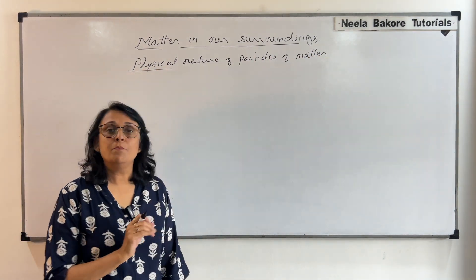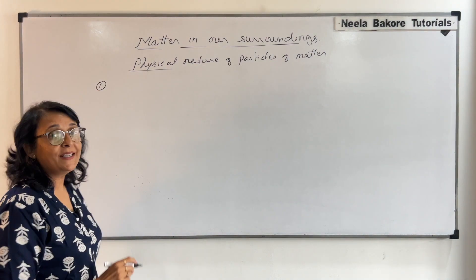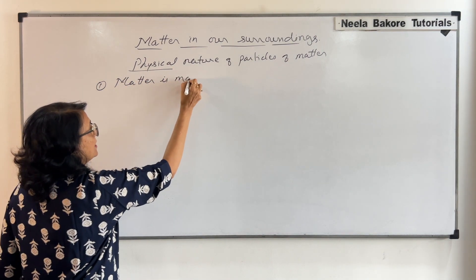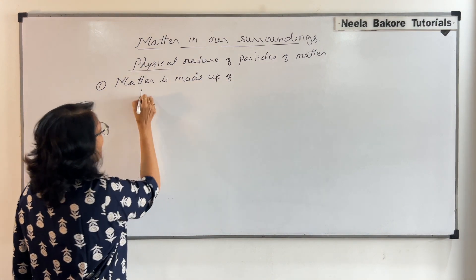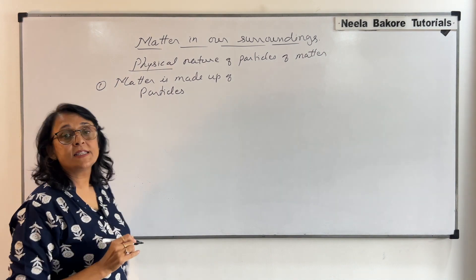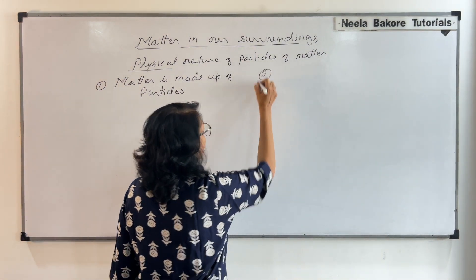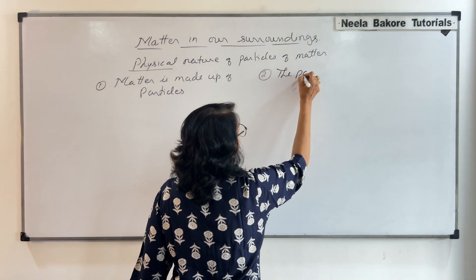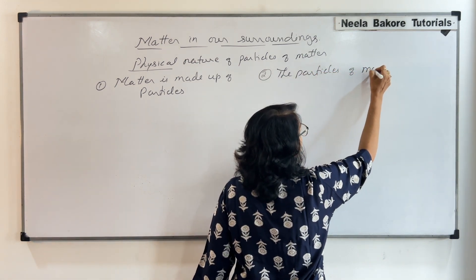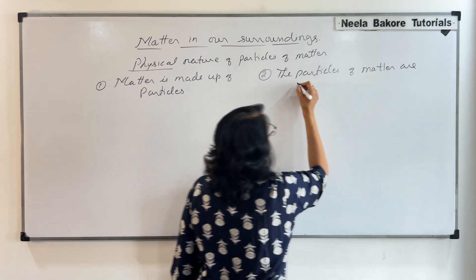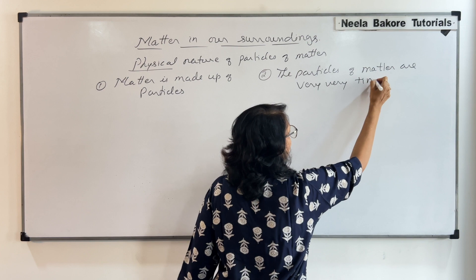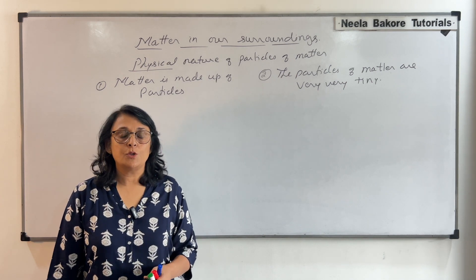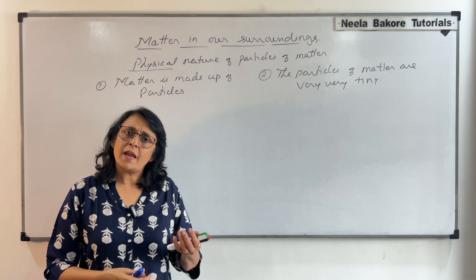Let us discuss two very important properties. Number one: matter is made up of particles. The second property we want to discuss is that these particles of matter are very, very tiny. To understand these two properties we need to look at some very simple experiments that we are used to doing or seeing in our everyday life.